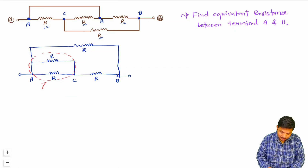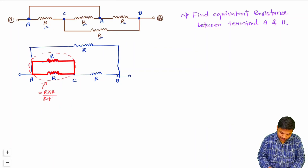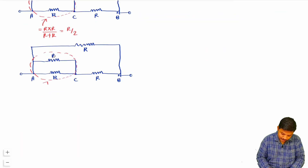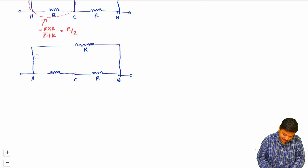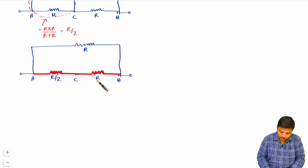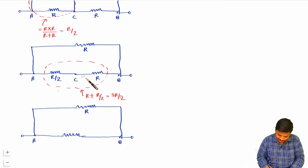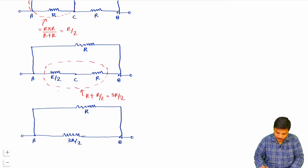Now we can simplify further. The two resistors between A and C are in parallel, so their equivalent is R×R/(R+R) = R/2. I redraw the circuit replacing those two resistors with R/2. Now the resistor R/2 (between A and C) and the resistor R (between B and C) are in series, giving an equivalent of R + R/2 = 3R/2. I replace those two resistors with 3R/2. So now the equivalent resistance R_AB is a parallel combination of R and 3R/2.